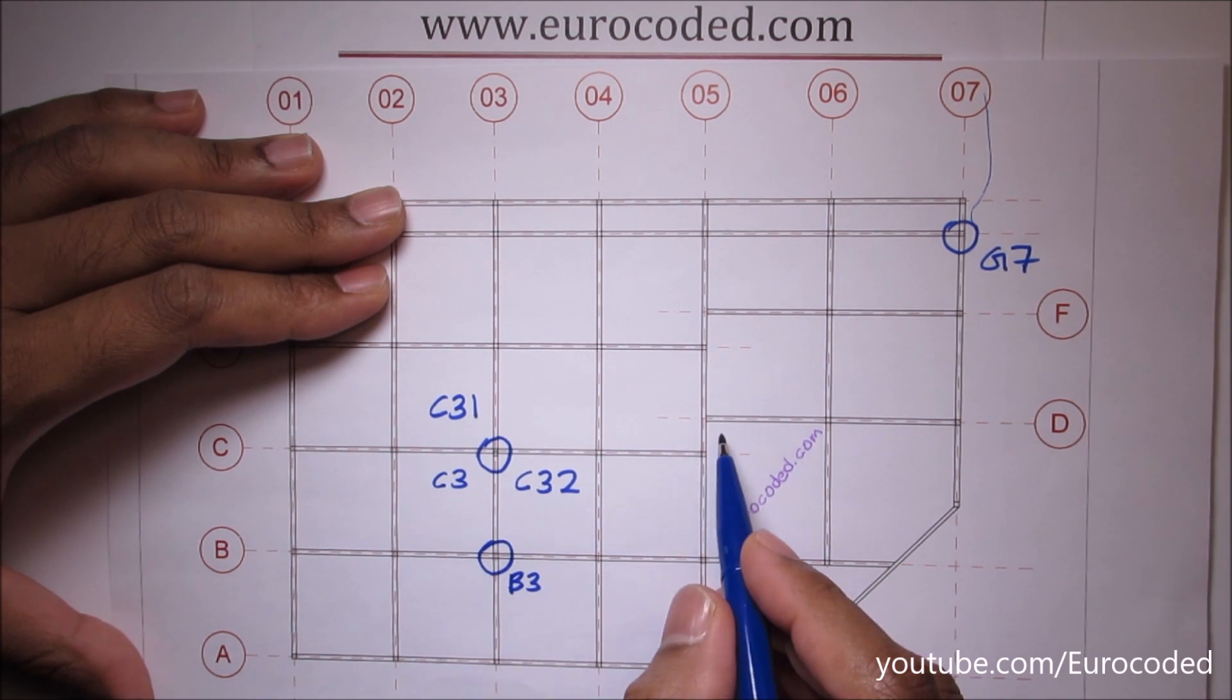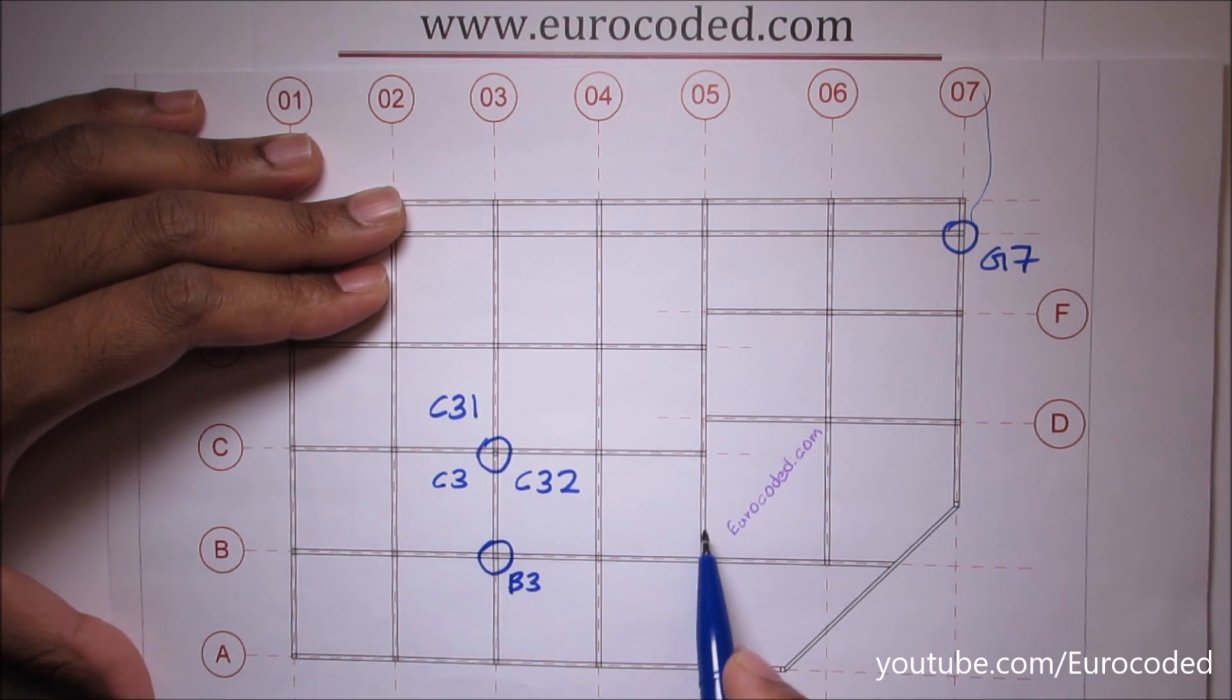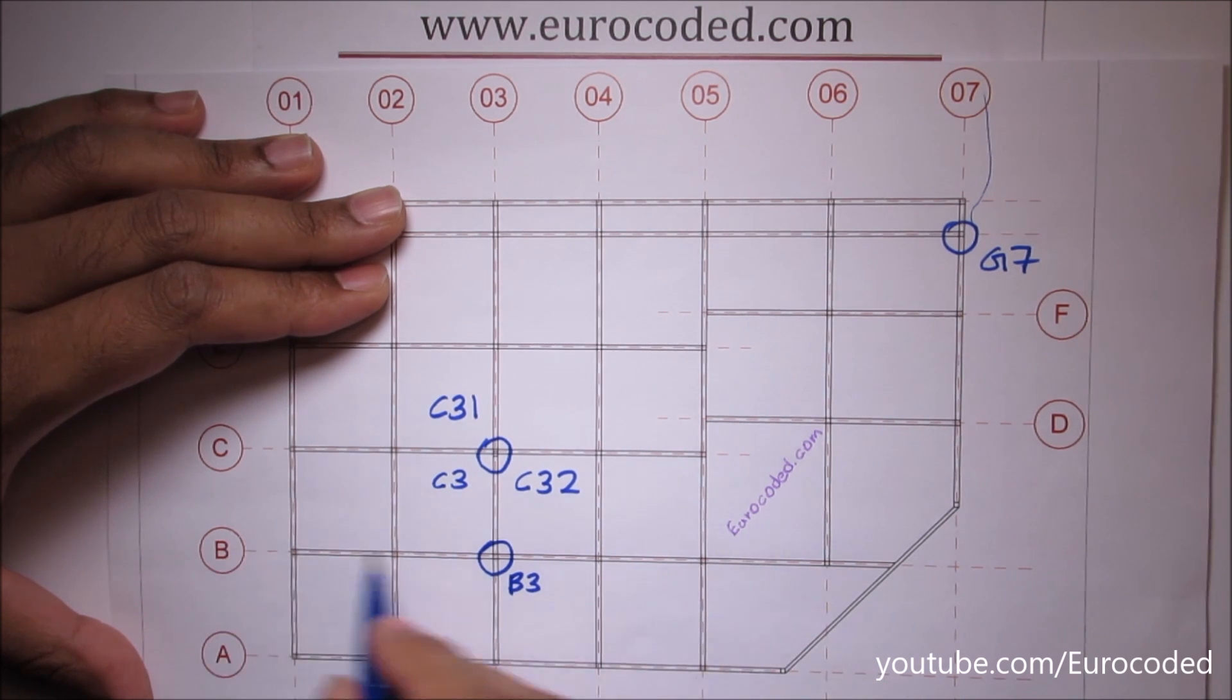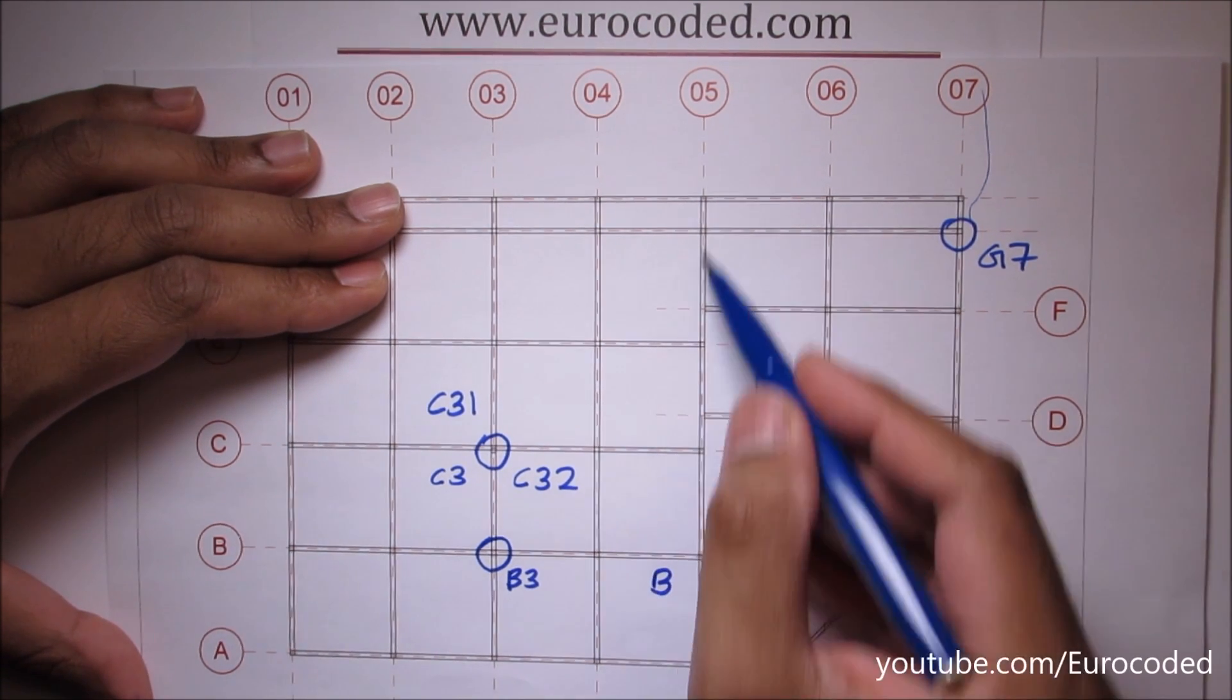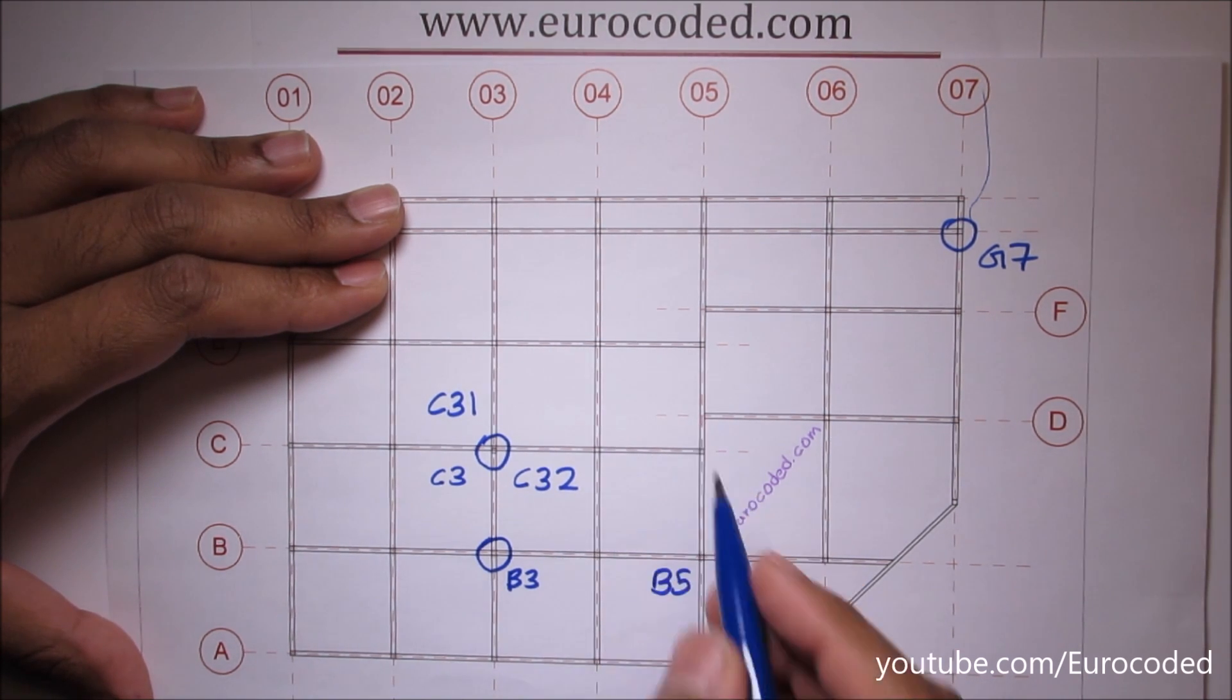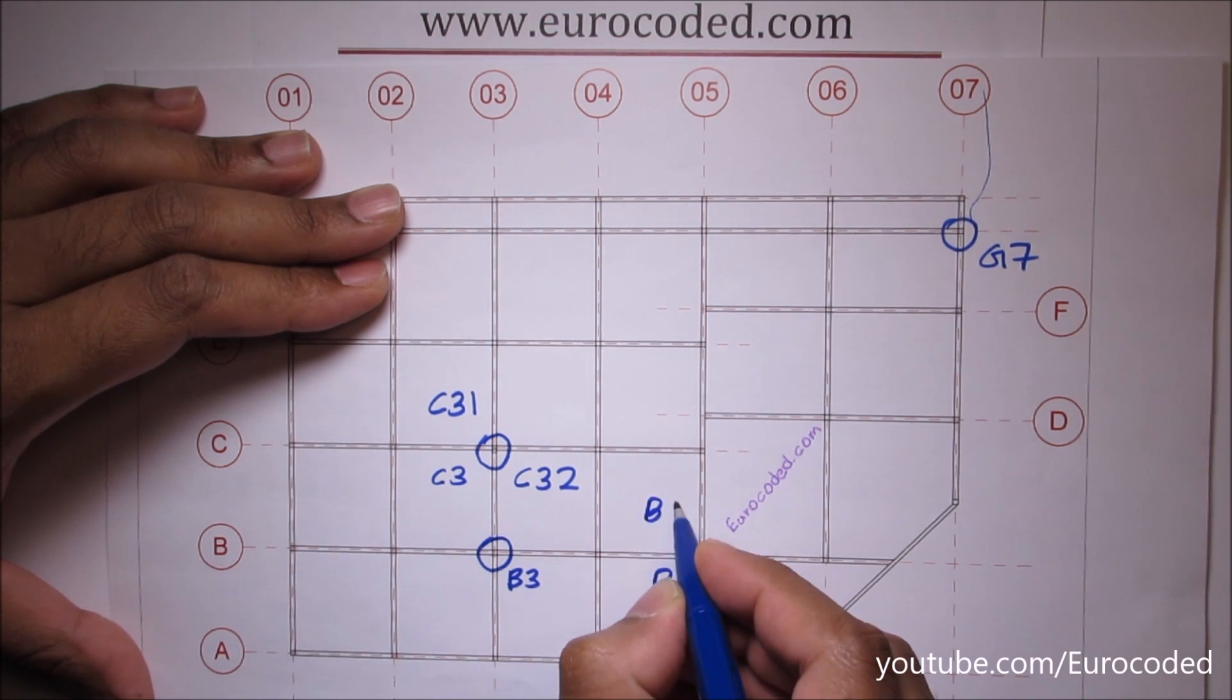If you take another floor panel, let's pick this particular panel and then this column would be B5 and the beams would be numbered accordingly with B5 as the reference.